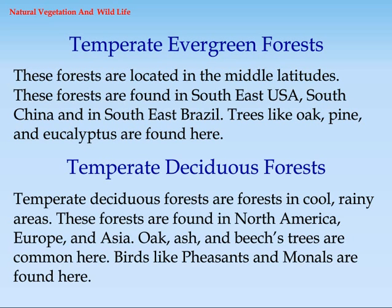Temperate Deciduous Forests are forests found in cool rainy areas. These forests are found in North America, Europe, and Asia. Oak, ash, and beech trees are common here. Birds like pheasants and munals are found here.